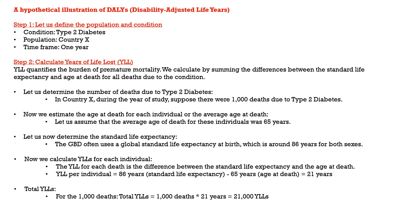Let me take you through a hypothetical illustration of how DALYs are calculated. Disability adjusted life years are an important metric for estimating global disease burden, because it considers two important components — mortality and morbidity — in estimating disease burden. Mortality means the years of life lost, and morbidity tells us how many years people are living by adjusting to disability. Here I have considered type 2 diabetes as a condition. The first step is to define the population and the disease type — understand that the DALYs are calculated for each disease and for each country.